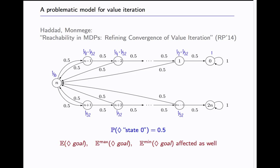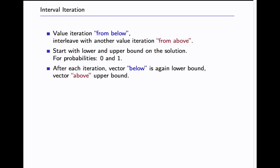In the paper we show that not surprisingly expected reward computations are similarly affected. So you can also get this catastrophic imprecision. Haddad and Monmarch proposed a solution to that and this is interval iteration. They proposed that for Markov chains and MDP probability computations. So the idea is you do the usual value iteration from below and you do another one at the same time or in parallel from the top, from above.